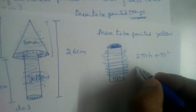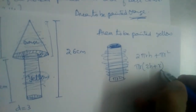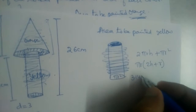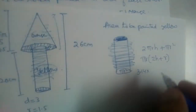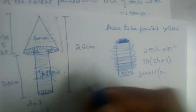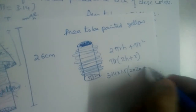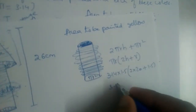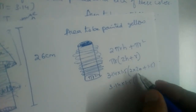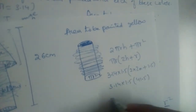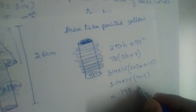Taking πr common, the expression becomes πr(2h + r). Substituting: 3.14 × 1.5 × (2 × 20 + 1.5) = 3.14 × 1.5 × 41.5, which gives us 195.465 centimeters squared. So this much area will be painted yellow.